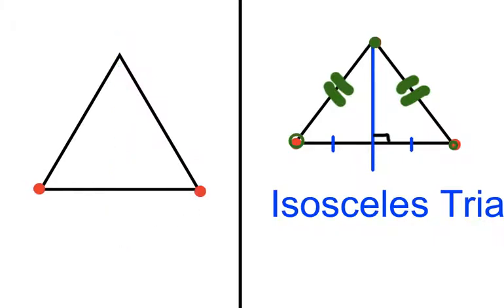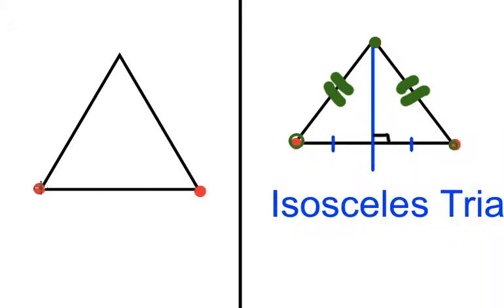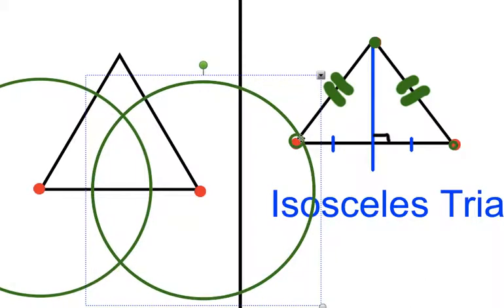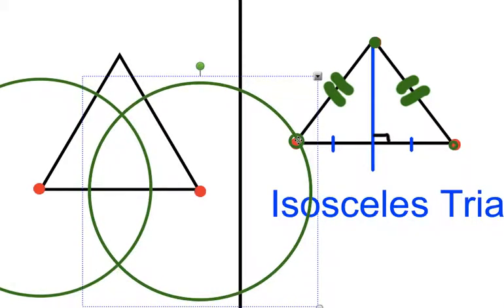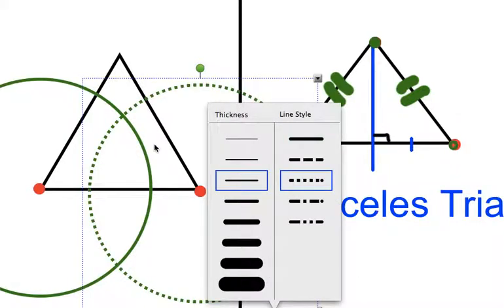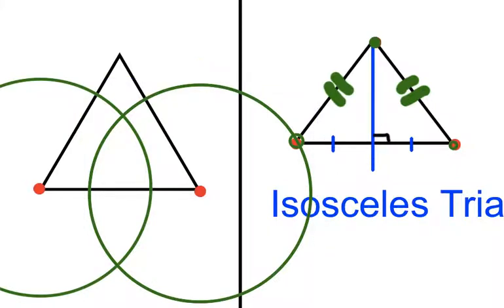But again, it's again using kind of this double circle idea. So, bring a circle out. Use the same circle, but center it over my right-hand point. And now, these two points should line up really well.